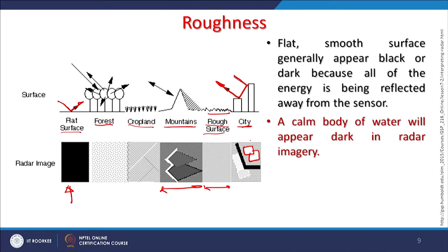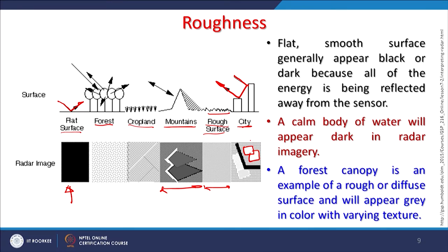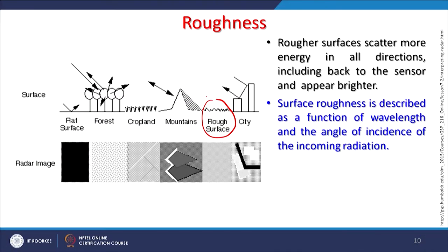Flat smooth surfaces generally appear black or dark because all energy is reflected away from the sensor. A calm water body will appear dark in radar images due to specular reflection. A forest canopy represents a rough or diffuse surface and appears gray with varying texture. Rough surfaces scatter more energy in all directions including back to the sensor and appear brighter. Surface roughness depends on wavelength and the incident angle of incoming radiation.